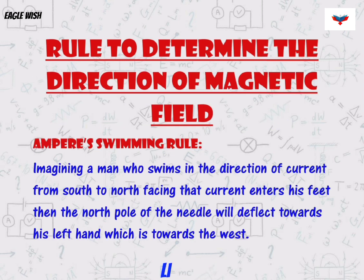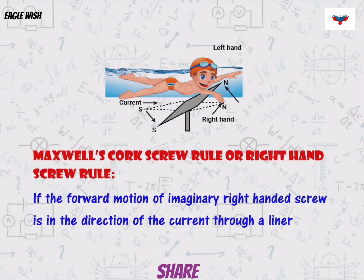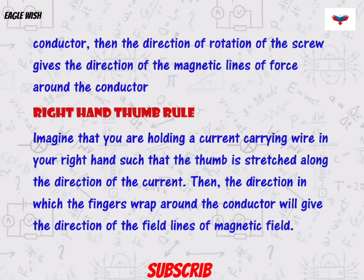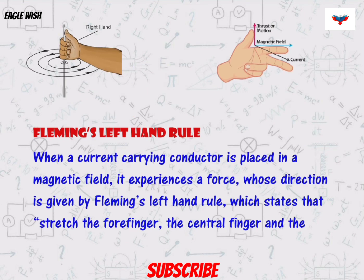We can even detect the direction of magnetic field by following rules like Ampere's swimming rule, right hand screw rule, right hand thumb rule, and Fleming's left hand rule.